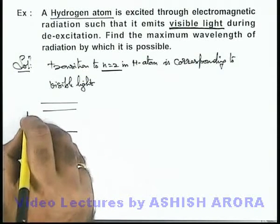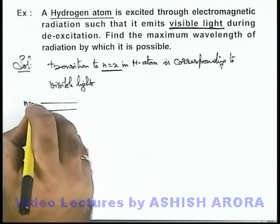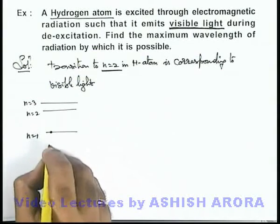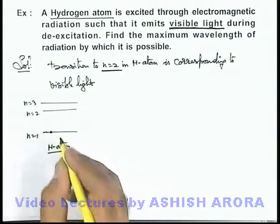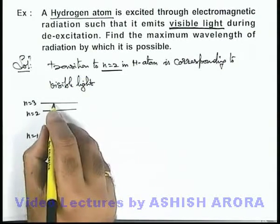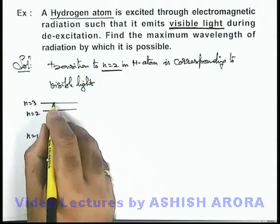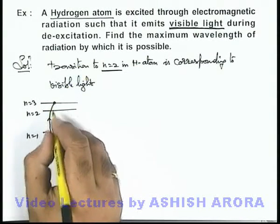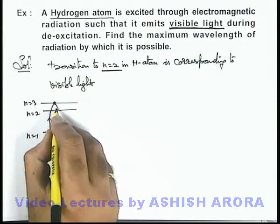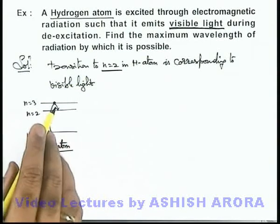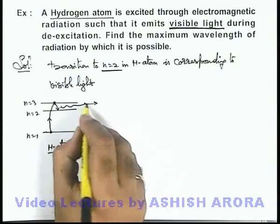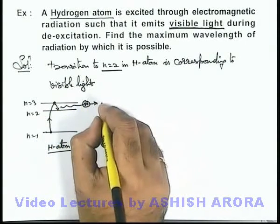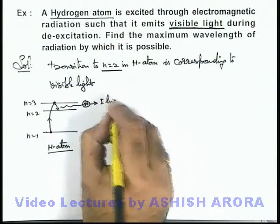Say if it is n equal to 1, this is n equal to 2, this is n equal to 3. Initially in a hydrogen atom we know that electron is in ground state, that is n equal to 1. So if it is excited to n equal to 3, and during de-excitation it makes a transition from n equal to 3 to 2, it will emit visible light which is corresponding to first line of Balmer series.